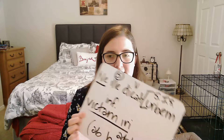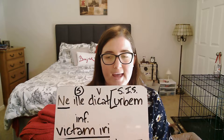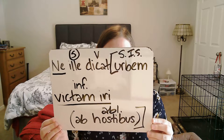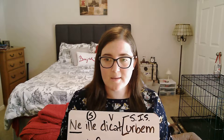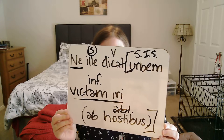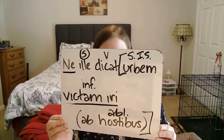Now it's time to translate. Remember that the start of your indirect statement is an unbreakable wall, so don't move things back and forth across the brackets. So I'm going to start with 'ne ille dicat'. Now 'ille' is the subject — let him... 'ne' gives us 'not', 'dicat' means 'say': let him not say. Moving into the indirect statement, that 'urbem' — the city — 'victum iri' will be conquered.